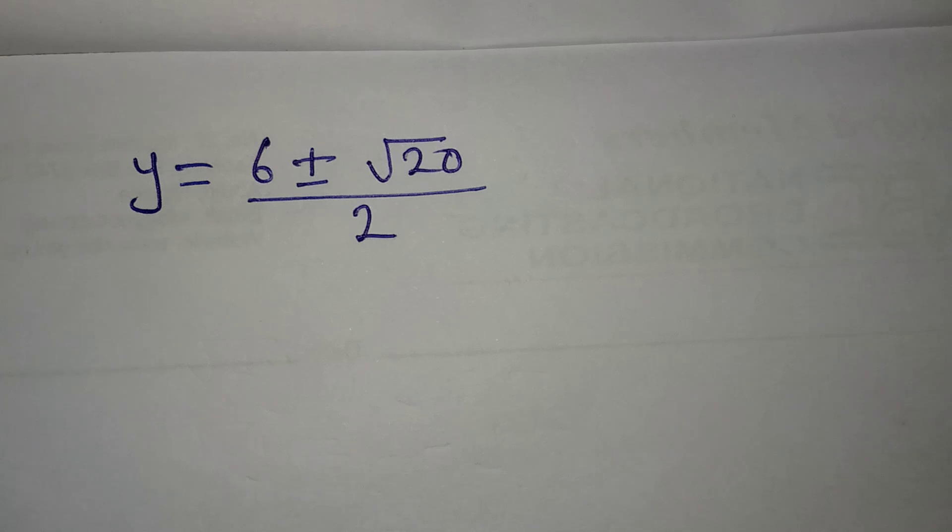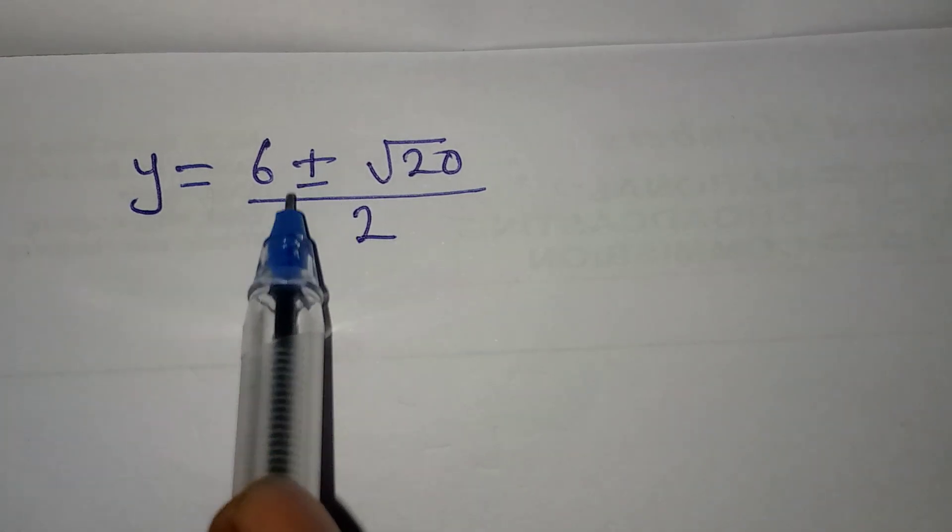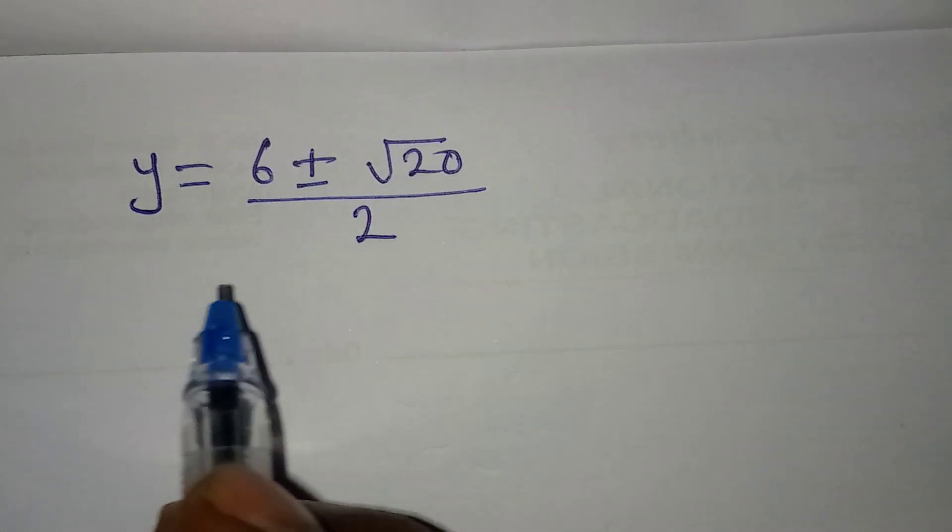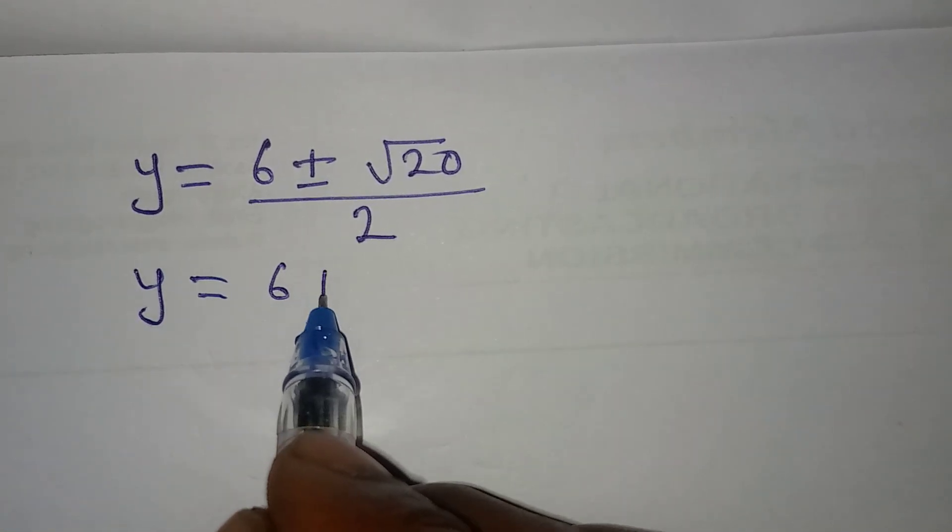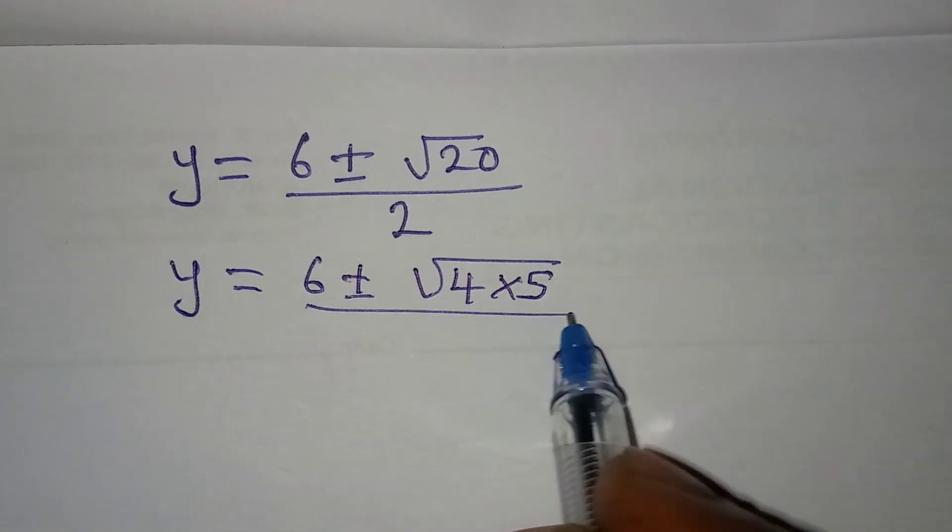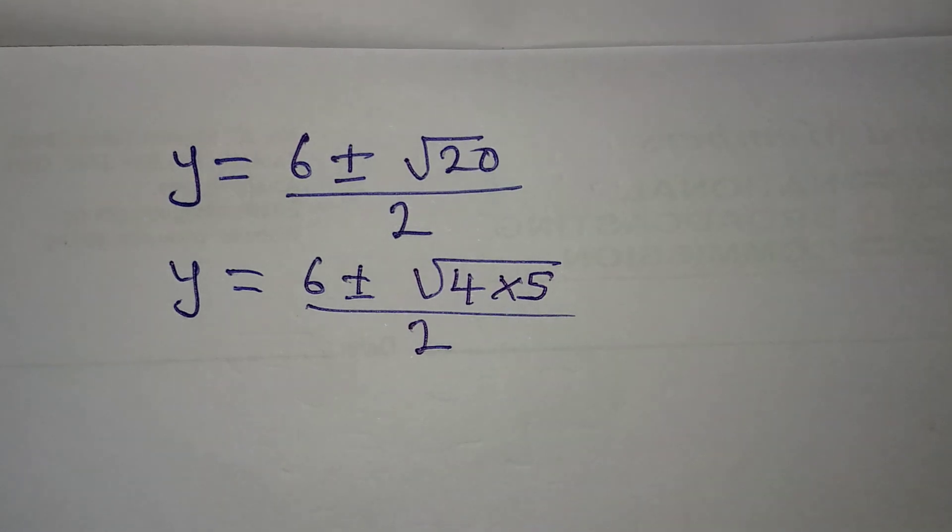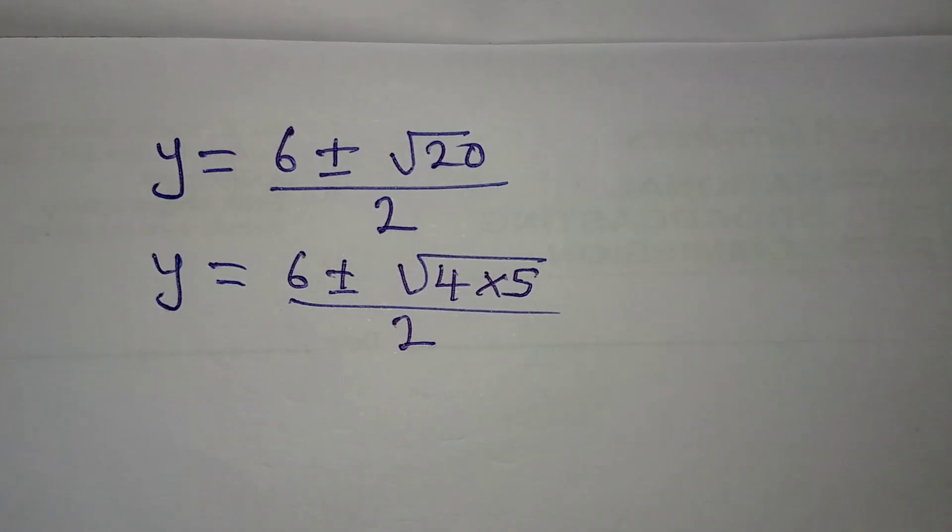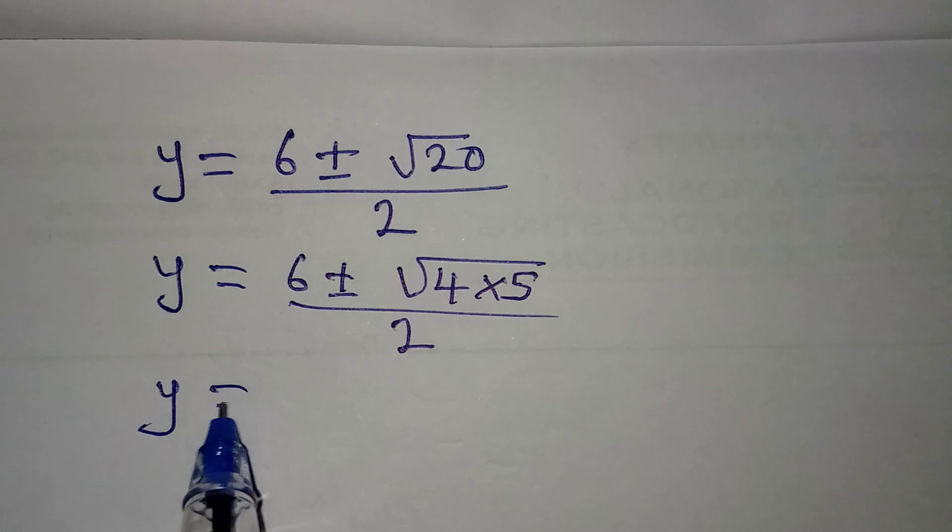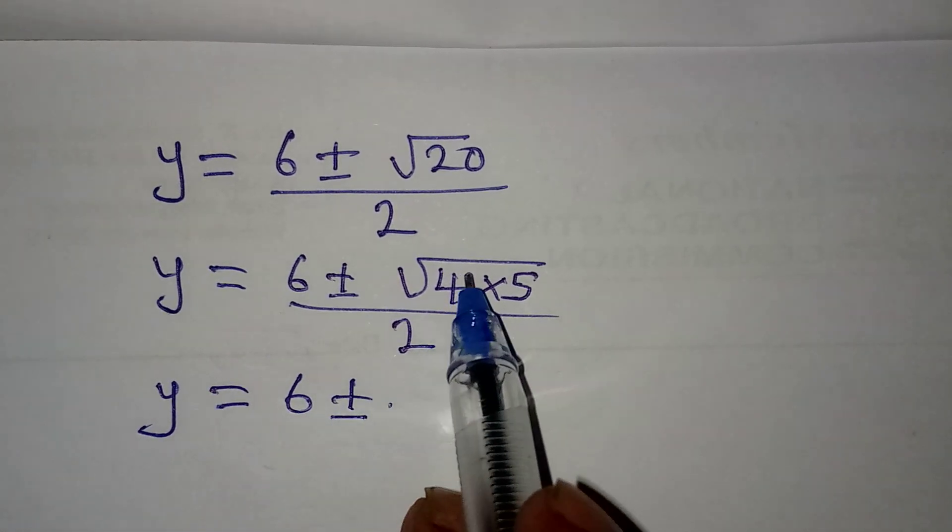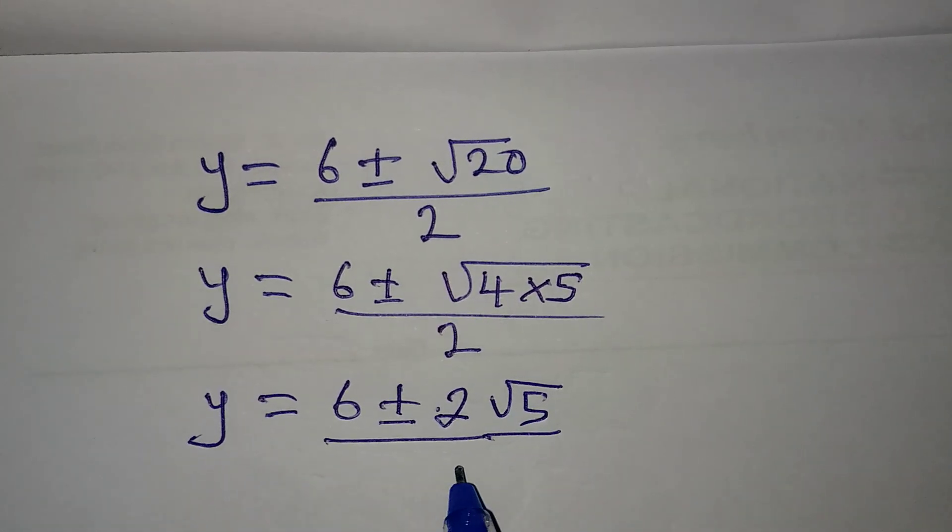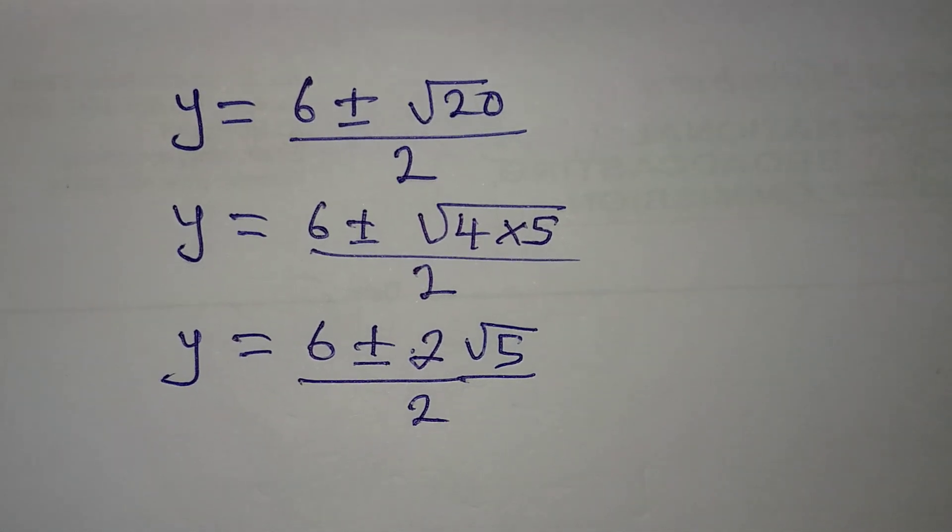What I want us to do is to break this 20 down so we can have y equal to (6 ± √20)/2. 20 is 4 times 5. Now why did we not use 10 times 2? Because none of them is a perfect square, but 4 times 5, 4 here is a perfect square. So y will be equal to (6 ± 2√5)/2.